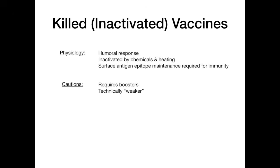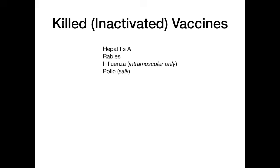As for cautions with killed vaccines, they require boosters throughout your life, because they technically induce a weaker immune response — so you boost the immune system every few years. The body is only recognizing surface antigen epitopes, which is why the response is weaker. The types of killed or inactivated vaccines are: hepatitis A, rabies, influenza (the intramuscular form — so the needle form is killed, while the intranasal form is live attenuated), and the Salk subtype of the polio vaccine.